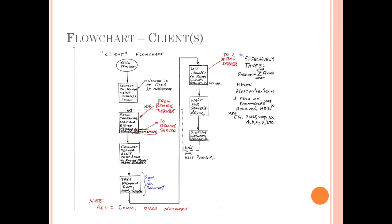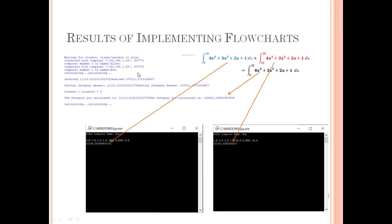Notice that the red arrows on this particular sheet show the communication with the client. This is the client's flowchart. It's remarkably simpler than the server.